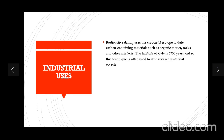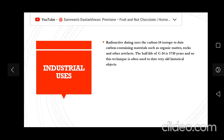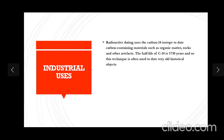Now coming across the industrial uses of these radioisotopes: radioactive dating uses the carbon-14 isotope to date carbon-containing materials such as organic matter, rocks, and other artifacts. One important thing to know is that the half-life of C-14 is 5,730 years, and so this technique is often used to date very old historical objects.